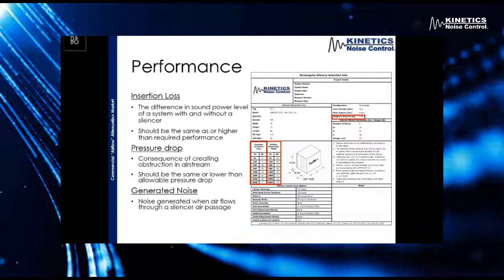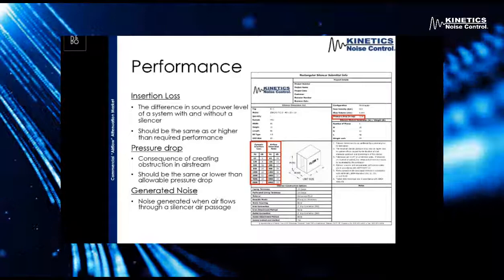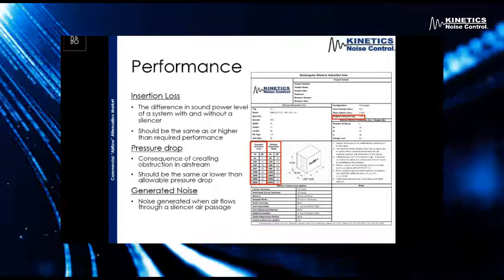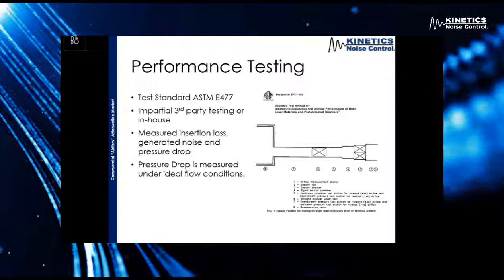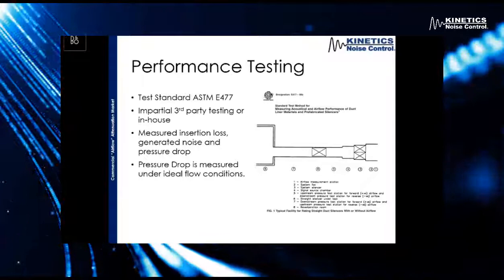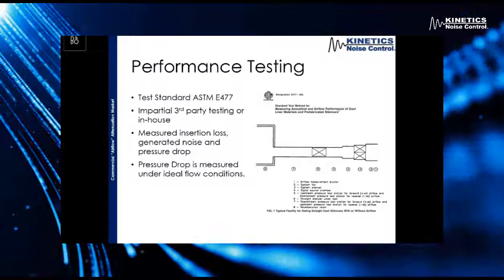There are some times we do need to consider generated noise — that's when we have rooms or spaces that require an NC-20 rating or lower. We're looking at spaces like performance halls, recording studios, things of that nature where sound is very, very sensitive. The way we get these performance numbers is through the ASTM E477 test standard. At Kinetics, we use impartial third-party testing — we send our silencers to get tested, and they use ASTM E477 to measure the insertion loss, generated noise, and pressure drop. What's important to note is that the pressure drop is measured under ideal flow conditions, and we'll get into why that's important in a couple of minutes.